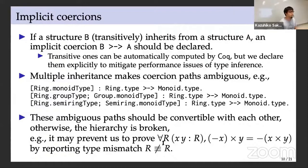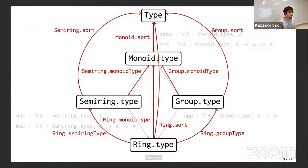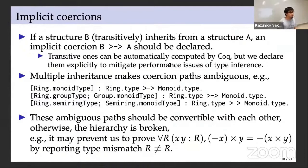Multiple inheritance makes coercion paths ambiguous — we saw three paths from ring type to monoid type. In packed classes, these ambiguous paths should be definitionally equal to each other; otherwise the hierarchy is broken. For example, it may prevent us from proving a trivial equation by reporting a type mismatch.